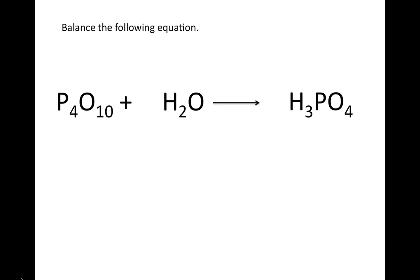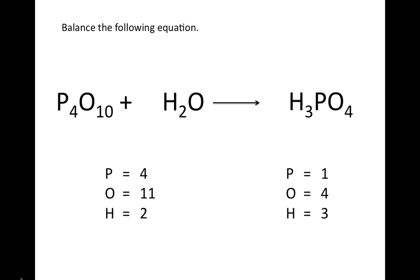Let's take a look at another example. Again, I'll start by taking inventory of how many of each type of atom I have on the reactant side and the product side. On the reactant side, I have four phosphorus atoms, 11 oxygen atoms — 10 from P4O10 and one from H2O — giving me a total of 11, and two hydrogen atoms. On the product side, I have one phosphorus atom, four oxygen atoms, and three hydrogen atoms.